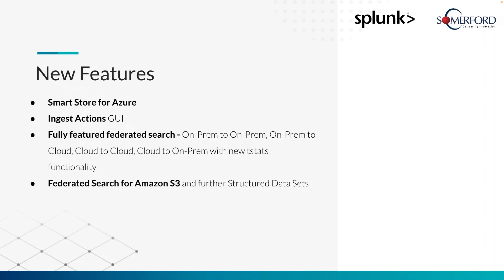They've also added federated search for Amazon S3 — being able to look into structured data sitting in an S3 bucket and scanning that. I like to think of this as similar to what we used to be able to do with DBX Query: you can have a DB Connect on the search head and run a query into a database straight off and leverage those results. This doesn't involve actually indexing the data sitting in S3 — it's just sitting there and we're querying it. So it reduces the cost of getting that data. It is a bit slower than if you brought it into Splunk, naturally. But it's a really powerful extra way of getting into data that maybe you don't have ingested, don't require to ingest, or use infrequently. A really nice extra feature coming with version 9.